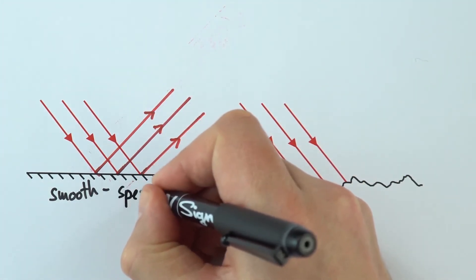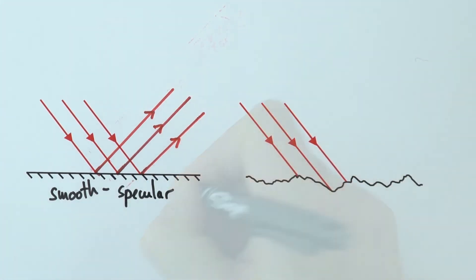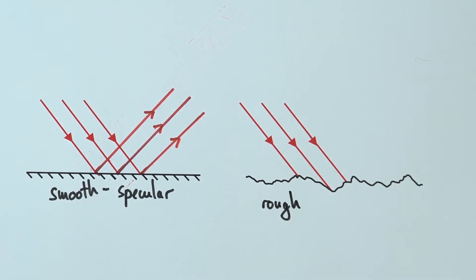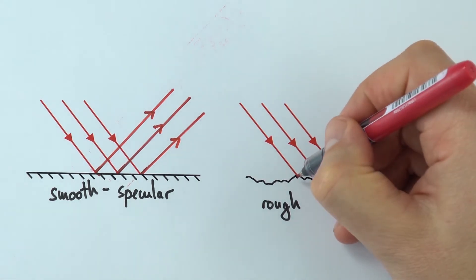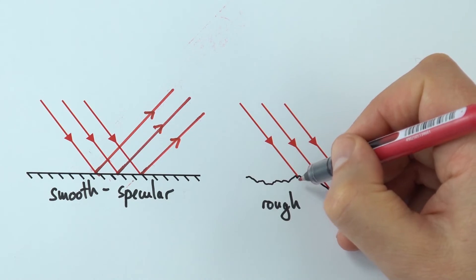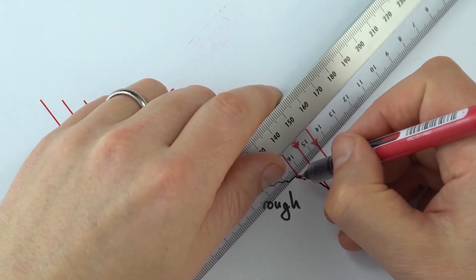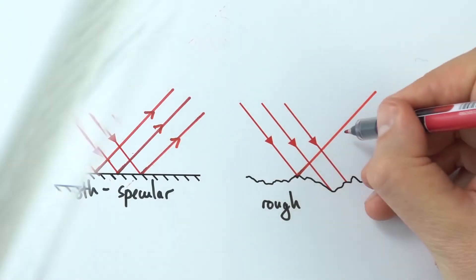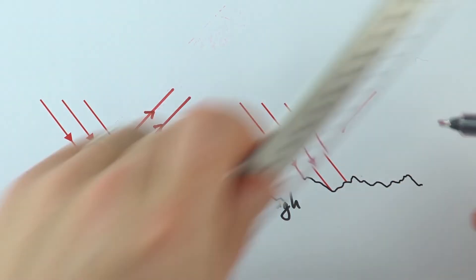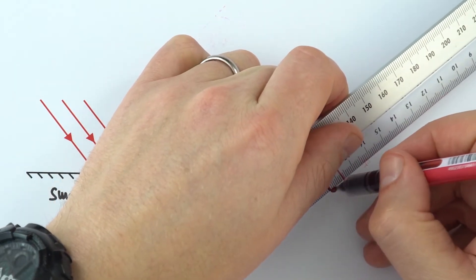But what happens in real life where we have lots of rough surfaces? We can still think about this ray of light hitting the surface, and at that particular point where the normal line is, we might draw this first ray of light coming off at an angle like that. But the second one hits at a different angle, and the second ray of light bounces off on a line that isn't parallel to the first one.